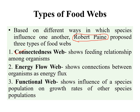The first type of food web is the connectedness web, which shows the feeding relationships amongst organisms. The second type is the energy flow web, which shows the connection between organisms and the energy flux — the amount of energy being transferred between organisms, whether it is high or low. The third is the functional web, which shows the influence of a particular species population on the growth rates of other species populations. All of these types of food webs were studied by Robert Payne in an estuarine ecosystem.